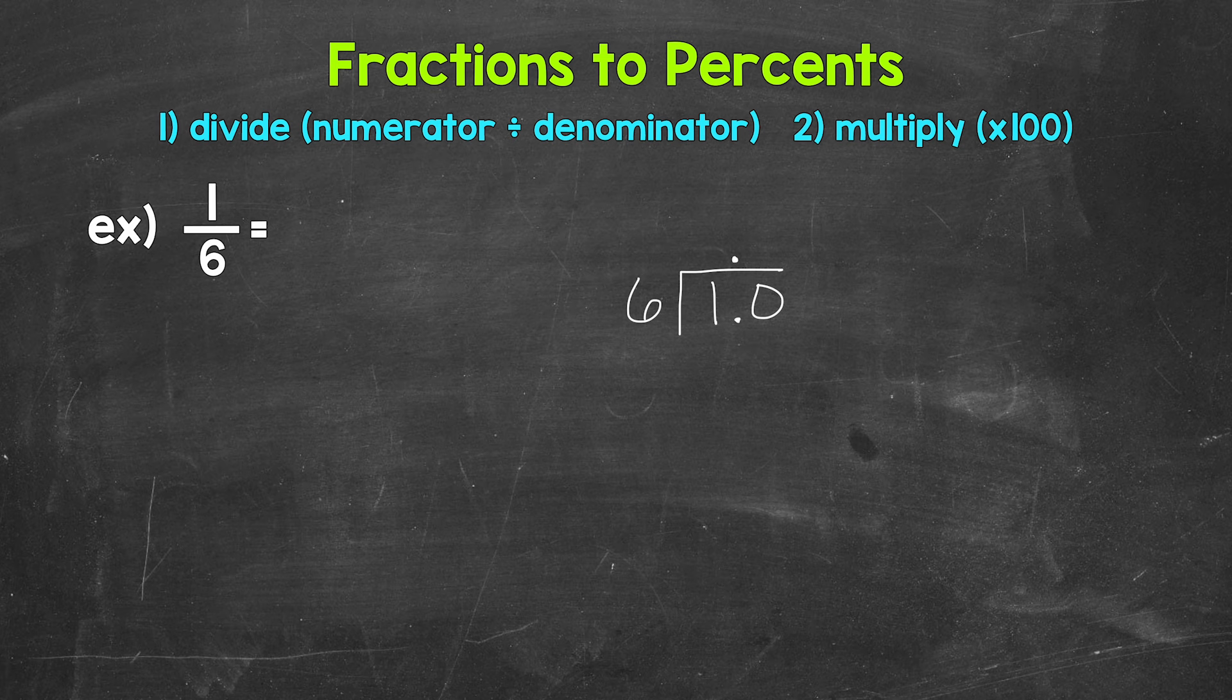Now we can think of this as 10 divided by 6. So how many whole groups of 6 in 10? Well, 1. And we need to make sure that 1 is above the 0 since we used that 0 and thought of this as 10. And that will line us up correctly. Now we multiply 1 times 6 is 6, subtract 10 minus 6 is 4.